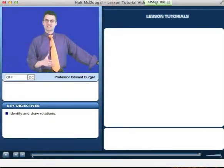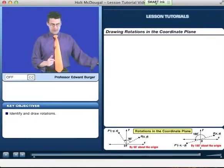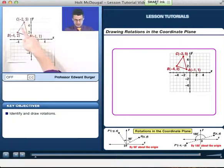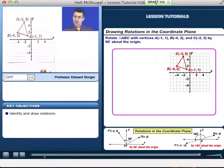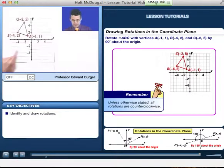All right, let's take a look at a rotation that actually happens in the coordinate plane. So in this case, what I see here is a triangle in the coordinate plane, ABC, and you can see the coordinates of those points. And what I want us to do is I want us to rotate triangle ABC by 90 degrees in a counterclockwise direction about the origin.